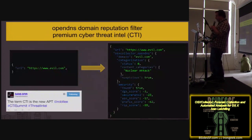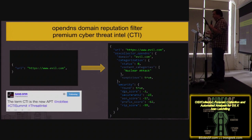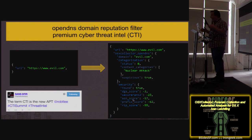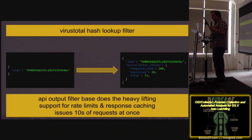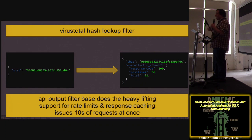The OpenDNS domain reputation filter: you can ask OpenDNS what they know about a domain. They have categories — one is 'nuclear attack,' which has never been in any of my data but I like it as a category. They can also give you statistical scores which you're free to interpret any way you want. We have a base class for API lookups that does all the heavy lifting: rate limiting, caching, parallel issuing of requests to speed things up. It's really easy to add new APIs — if you go home and start hacking on this, contribute new APIs using the base class.